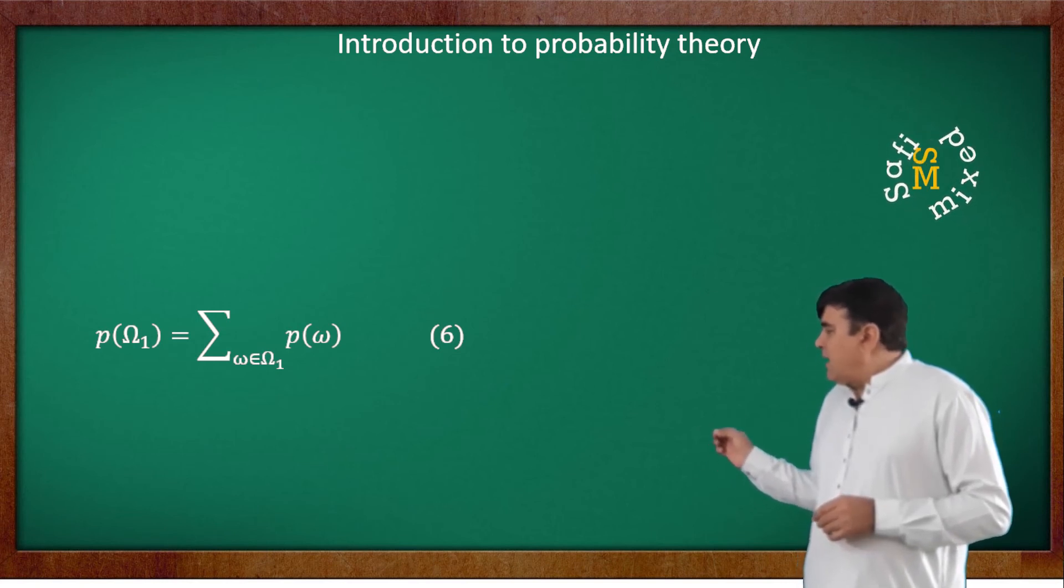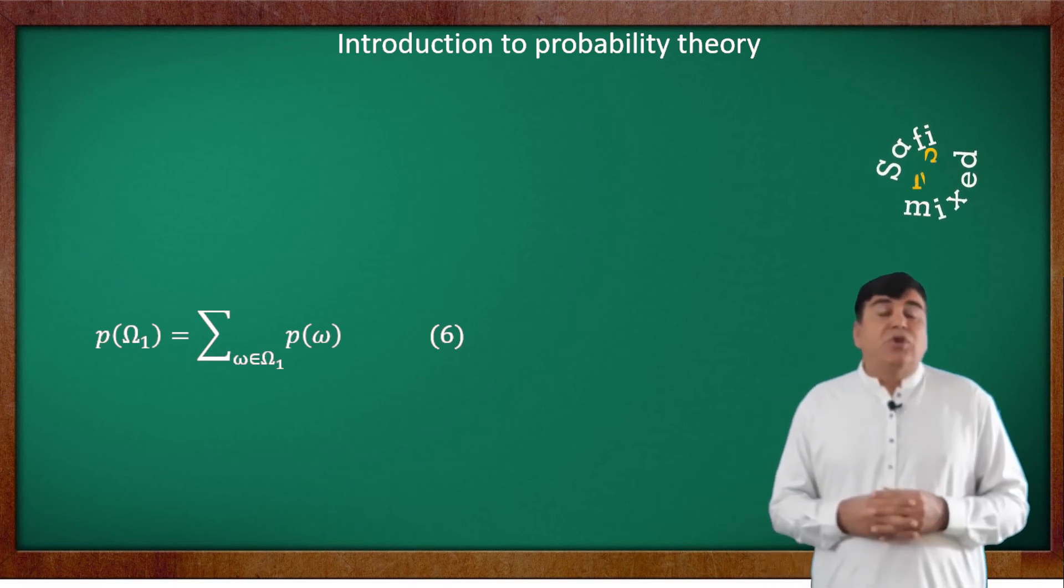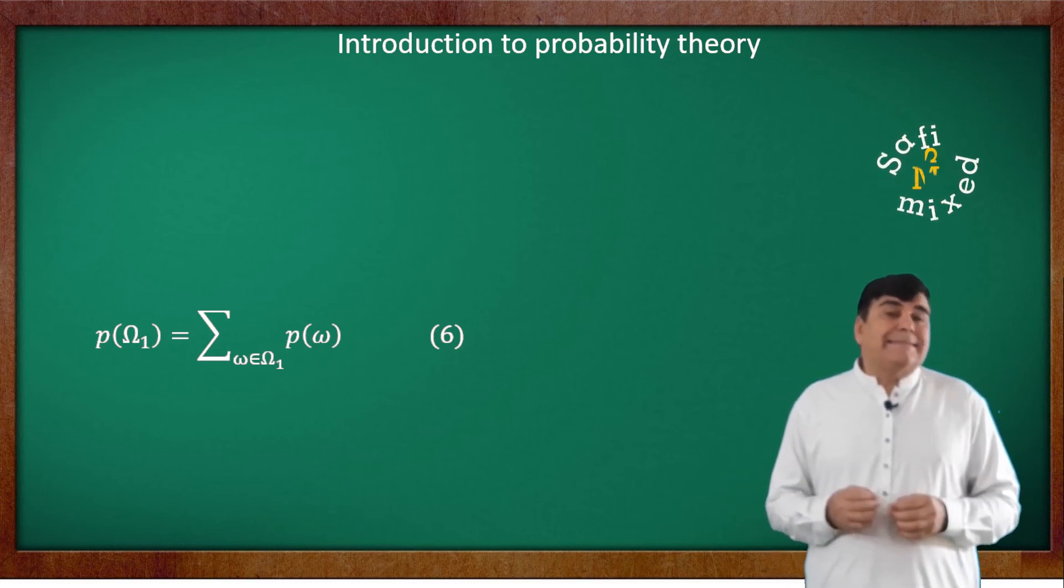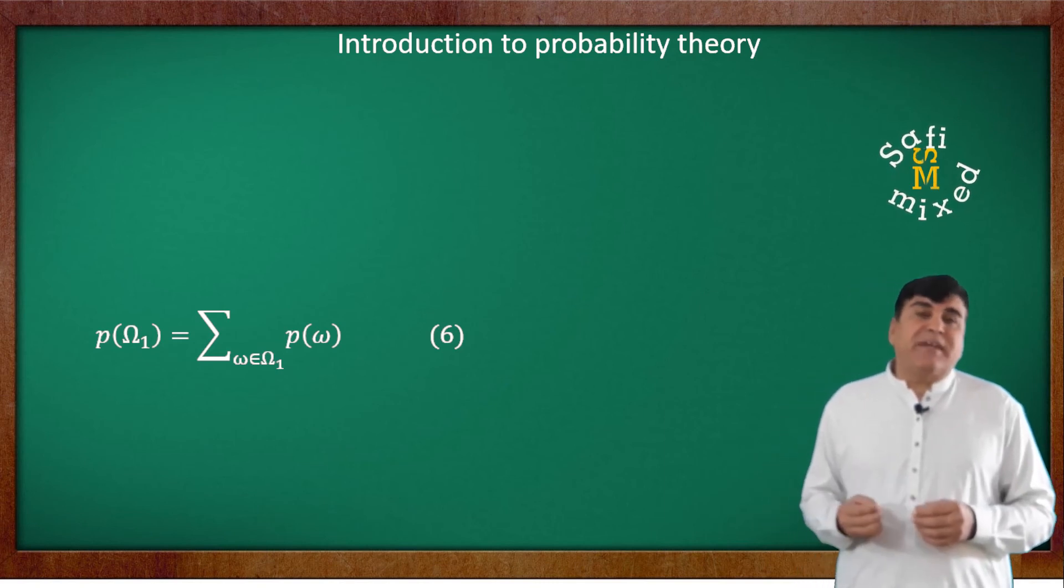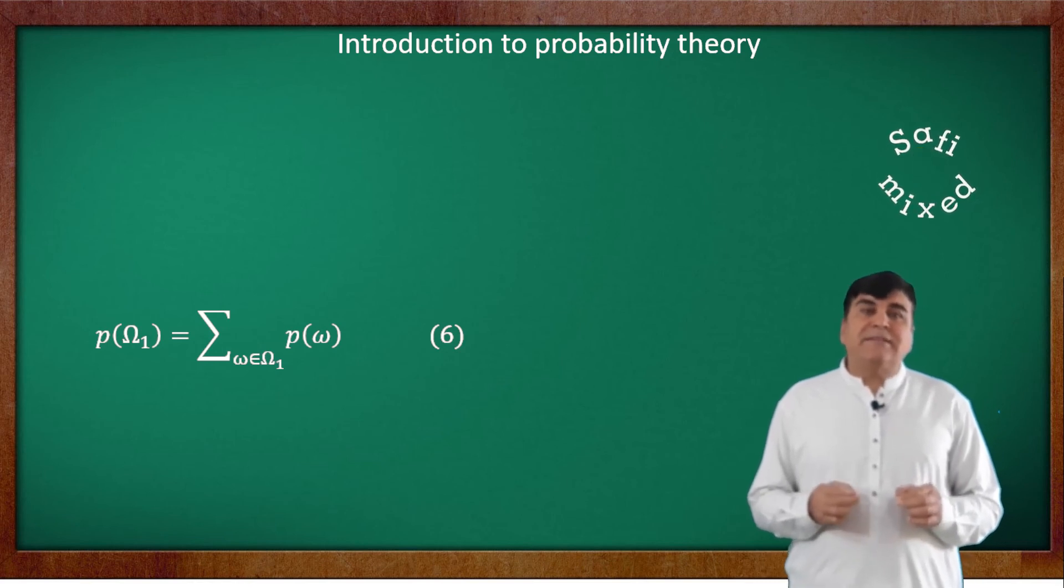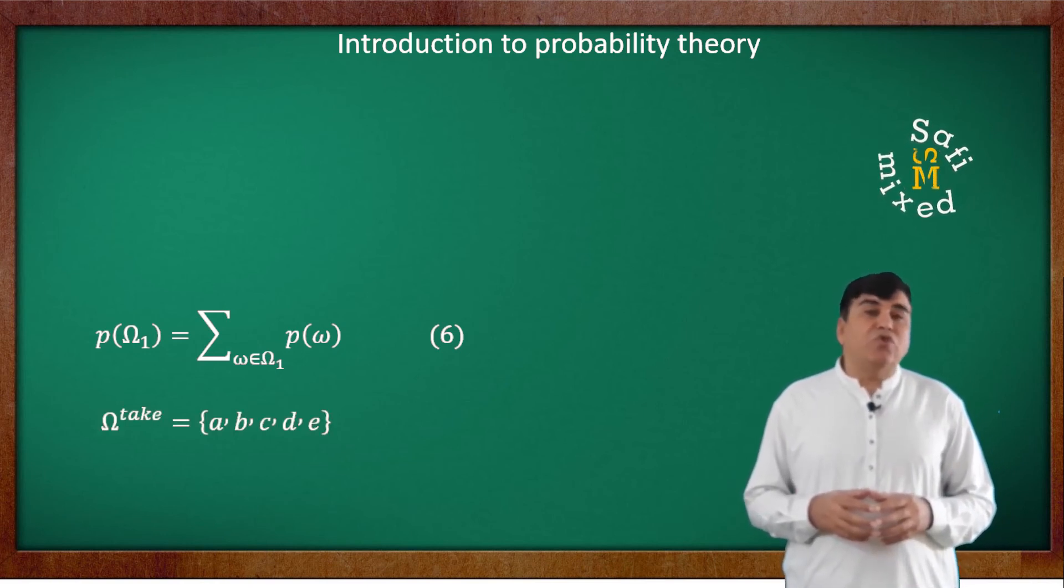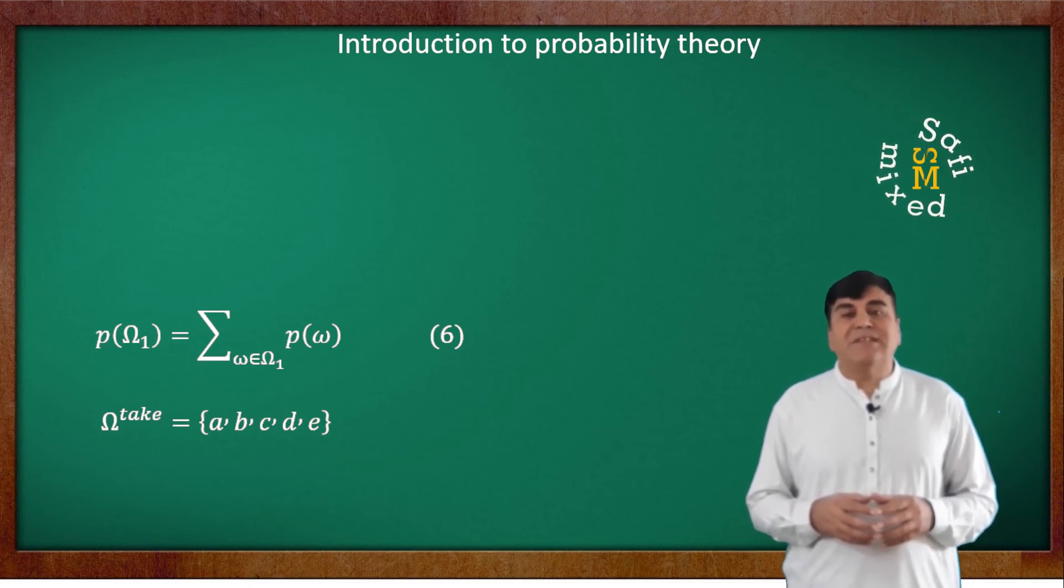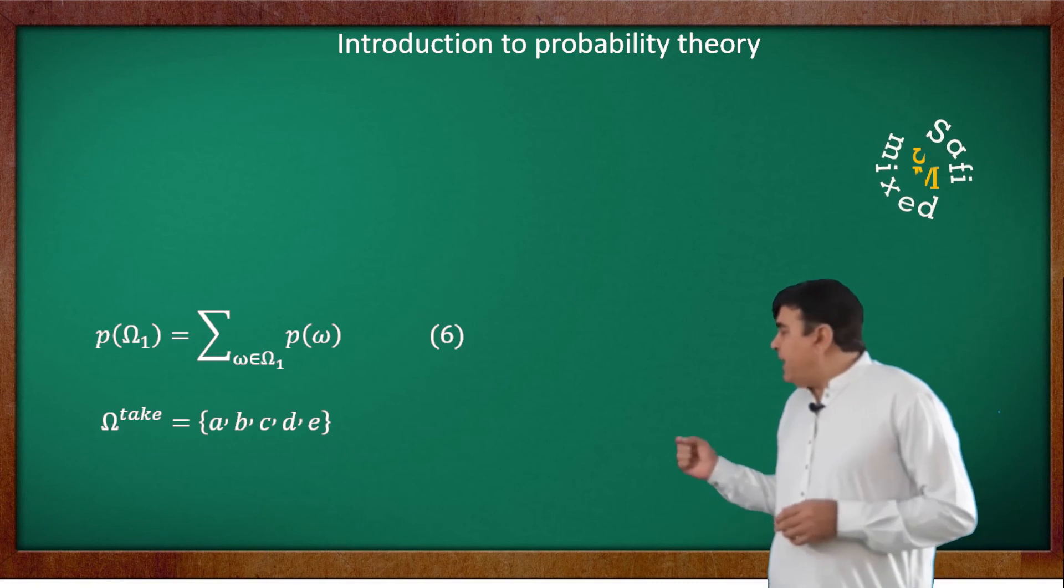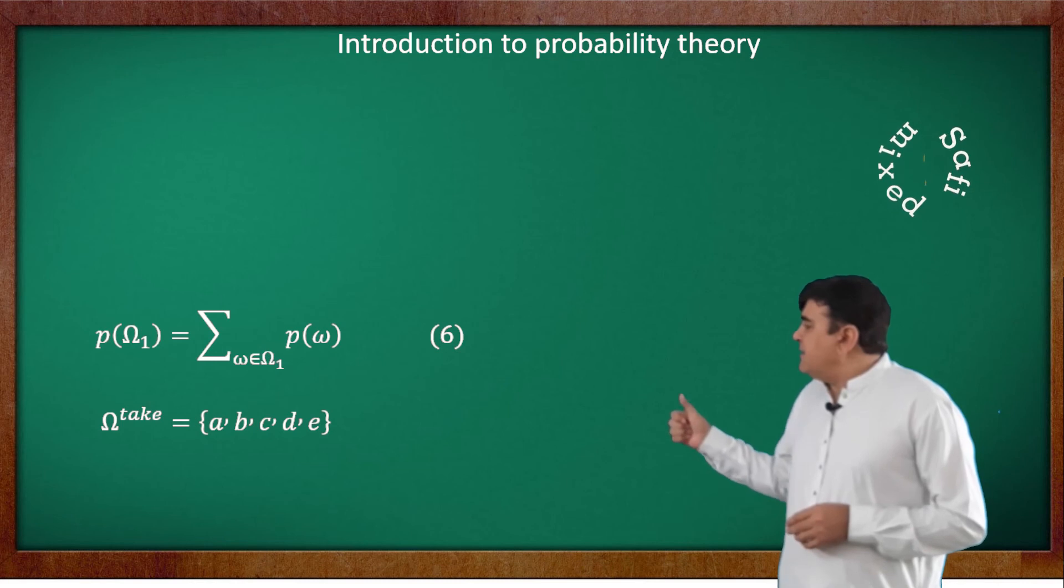For example, in the example of balls, let the balls be labeled with first five English alphabets. Then the total sample space consists of five outcomes, one each corresponding to the pick of a single ball. So we write Ω_take = {A, B, C, D, E}.